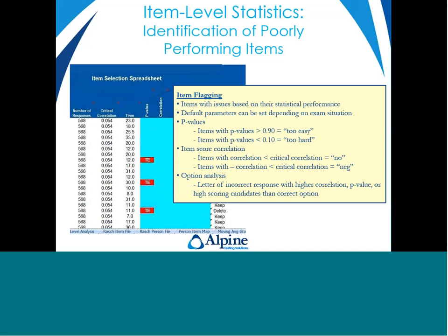Item flagging is really key. At Alpine, we typically flag on item difficulty, item score correlation, and option analysis. These are our standard flagging values, but it's important to note they can be parameterized to what makes sense for your exam. In certain exam programs, 0.9 and 0.1 difficulty thresholds might make sense; in others, maybe it's 0.75 and 0.25. At Alpine, we can completely parameterize those within our item selections and health checks, and the intended use and interpretation of test scores should drive those statistics.